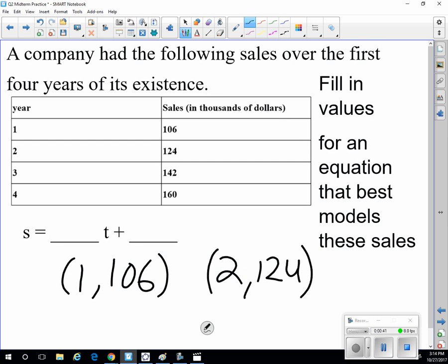So we need to find the increase in the sales, so we would say 124 minus the 106, that tells us we're increasing by 18.